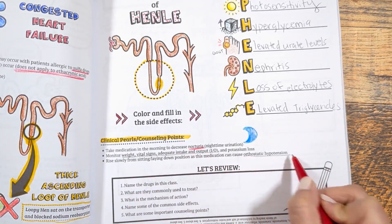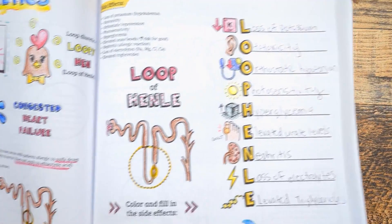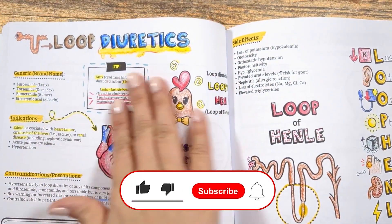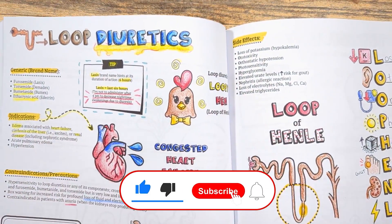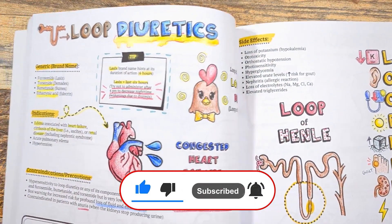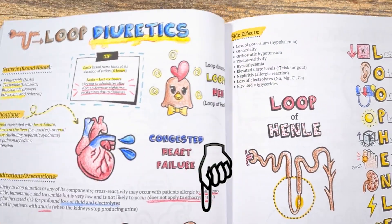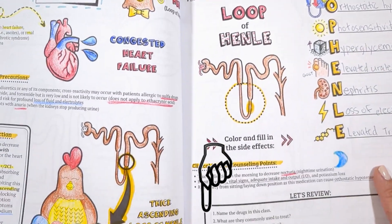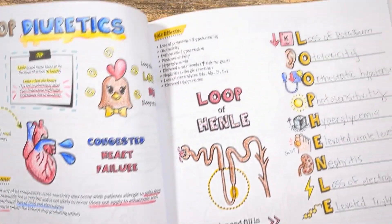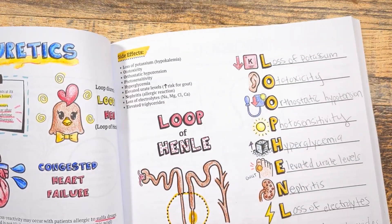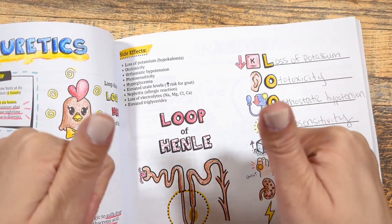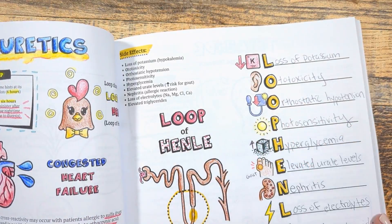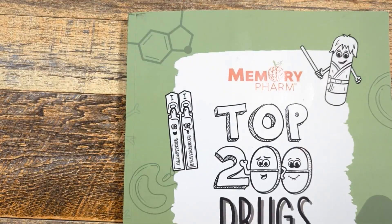Remember our loopy hen! That's it for today. If you found this helpful, click that subscribe button for more. Let me know if you have questions in the comments and I'll be happy to answer them. If you're interested in getting more information from our Top 200 Drugs Made Easy Coloring Book, I'll leave a link in the description below, and I'll see you in the next video.